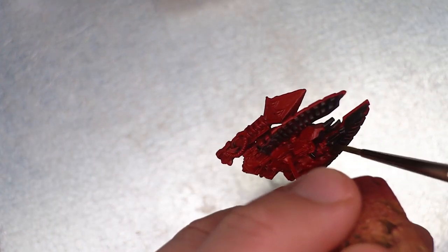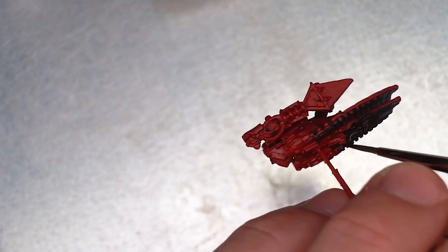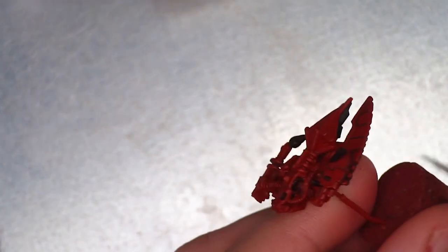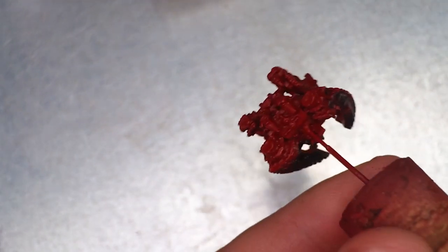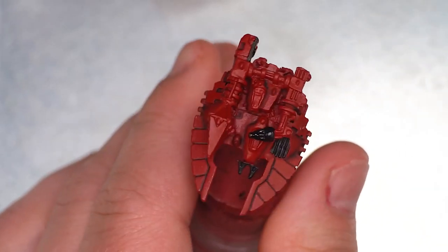Now because this is epic 40k scale you can always reference full-scale models if you're struggling to find any imagery that is exact within say white dwarf articles or what have you, so always check google images or pinterest if you're struggling to find reference images for the model that you want to paint.